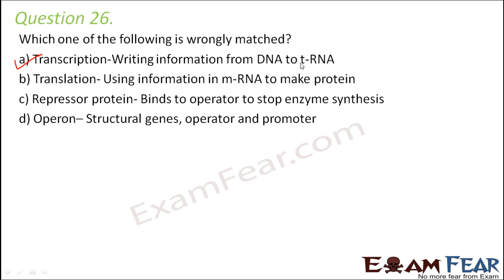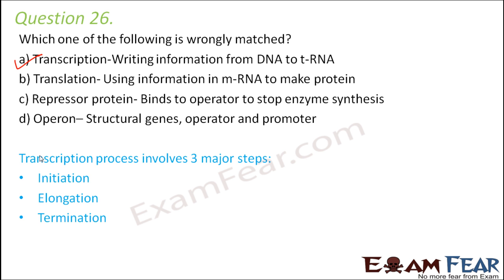This entire process of transcription has three major steps: initiation, elongation, and termination. In initiation, the RNA polymerase enzyme binds to DNA so that it can do its job. In elongation, after RNA polymerase is bound to DNA, it causes the helix of the DNA to open and causes elongation. In termination, the termination sequence is recognized and RNA polymerase is released from DNA. So: step one — RNA polymerase binds to DNA; step two — it elongates; step three — it gets released.